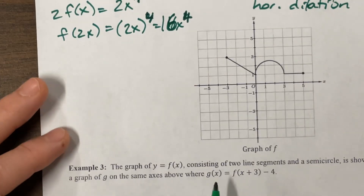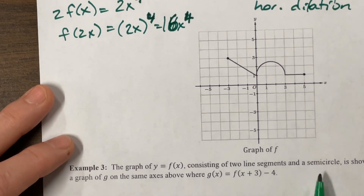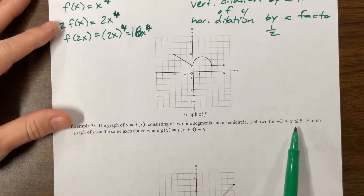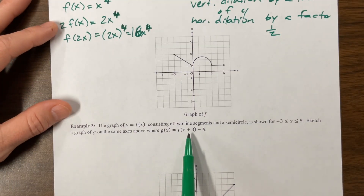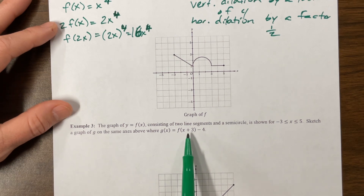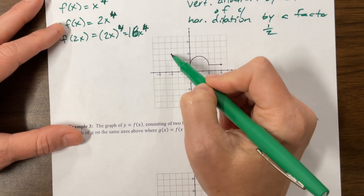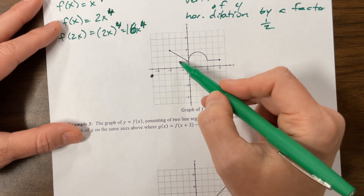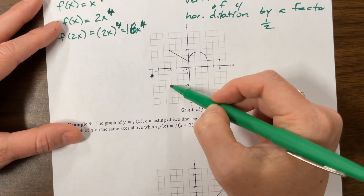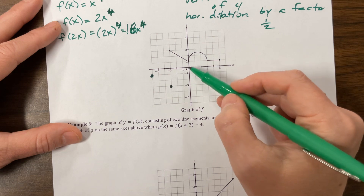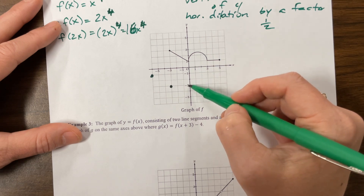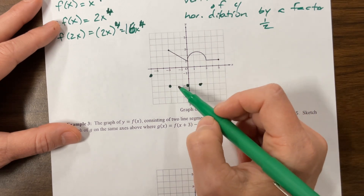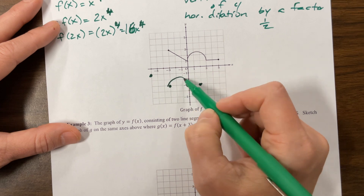The graph consists of two line segments and a semicircle, going from negative 3 to 5. Sketch the graph on the same axis — this is going to shift us to the left 3 and down 4. So going left 3 and down 4, I can take each key point: left 3 — 1, 2, 3 — down 4 — 1, 2, 3, 4. This segment was two units long, so that's two units long. And this went up above — pretend I can draw.